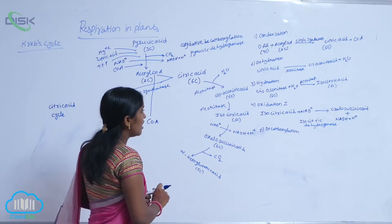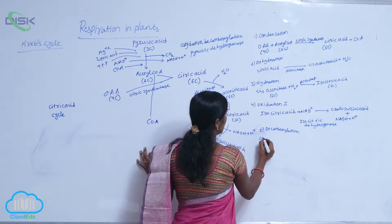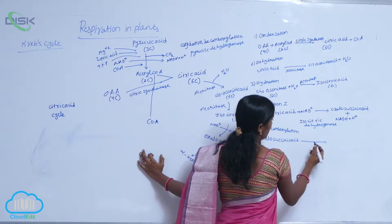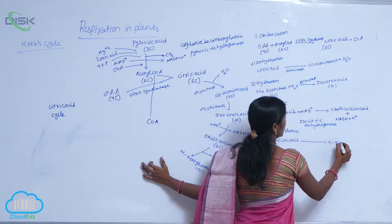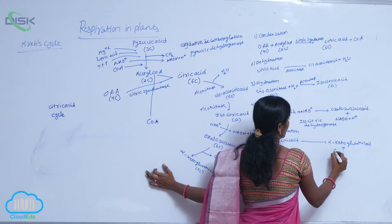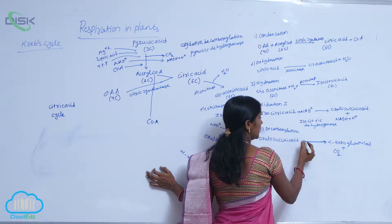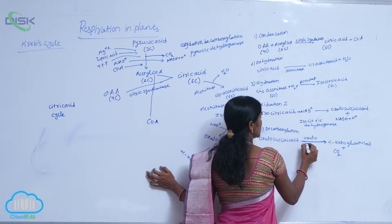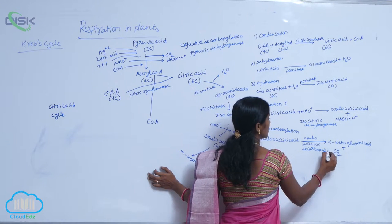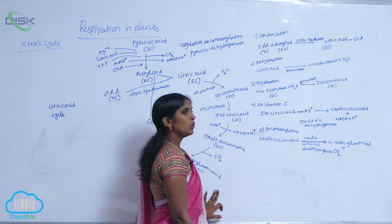This reaction is mediated by oxalo-succinic dehydrogenase enzyme. Here, oxalo-succinic acid is converted and alpha-ketoglutaric acid is produced, with one CO2 molecule released. This reaction is mediated by the enzyme oxalo-succinic decarboxylase. This is the decarboxylation reaction, producing alpha-ketoglutaric acid.